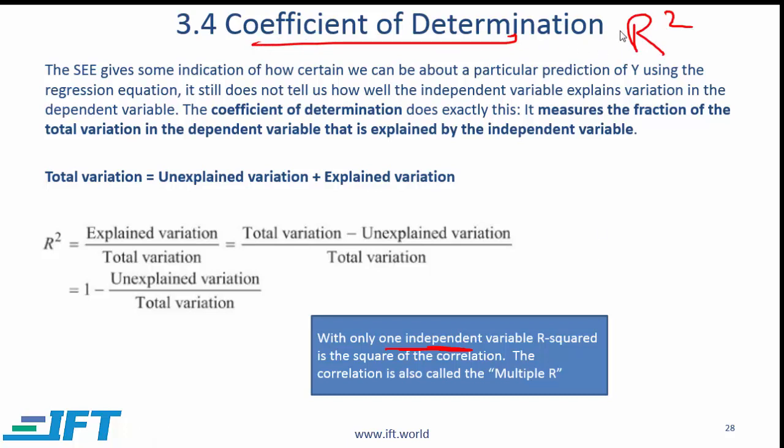So it is sometimes written like this. Sometimes it's called the coefficient of determination. Sometimes it's written like this. So with only one independent variable, R squared is the square of the correlation. So with one independent variable, you just have x and a y.